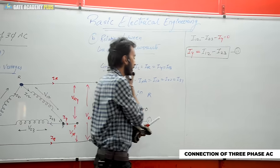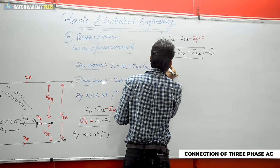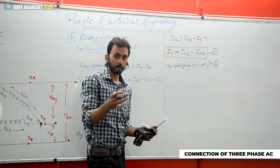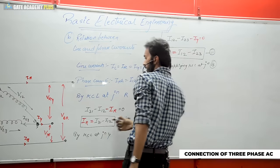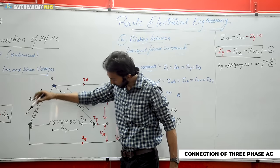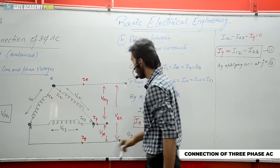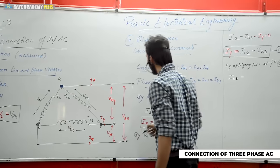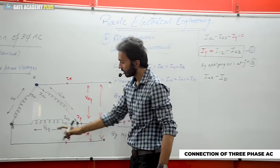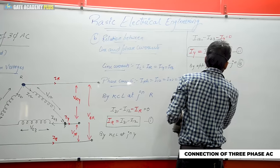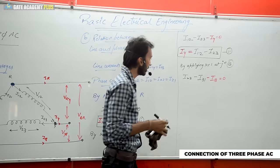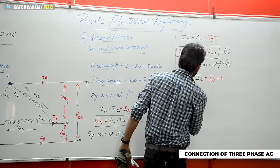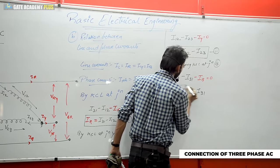Continuing with equation 3, by applying KCL at junction B: incoming current I23 is positive, outgoing current I31 is negative, and outgoing line current IB is also negative — equals zero. Therefore IB = I23 − I31. This is equation number 3, expressing the third line current. So all three line currents have been expressed in terms of phase currents.